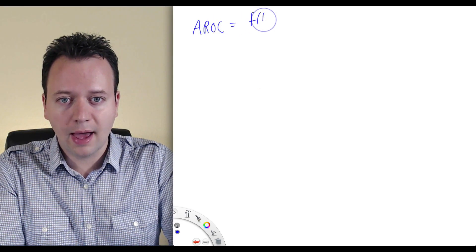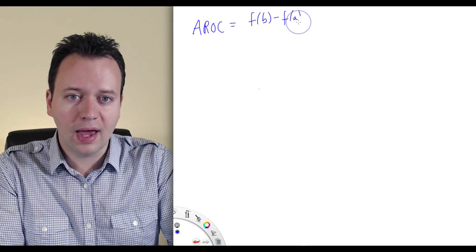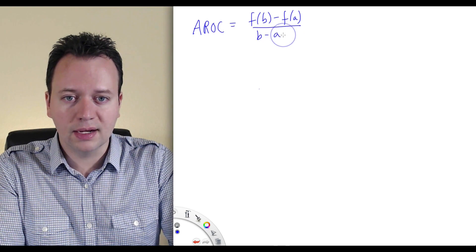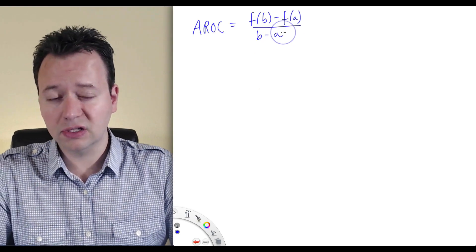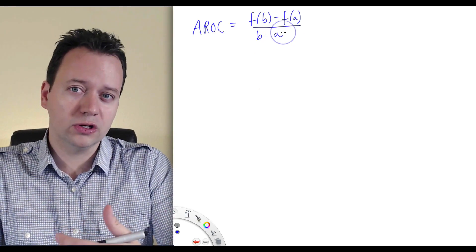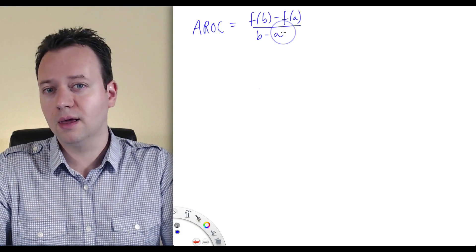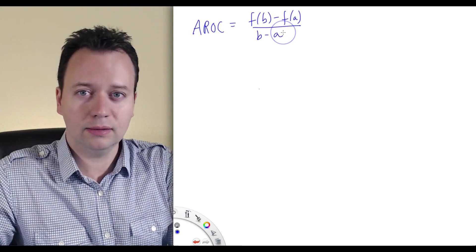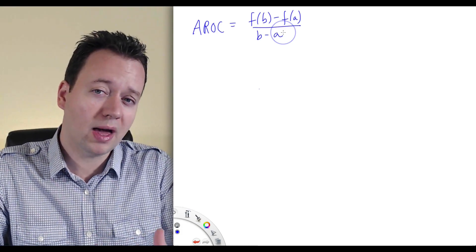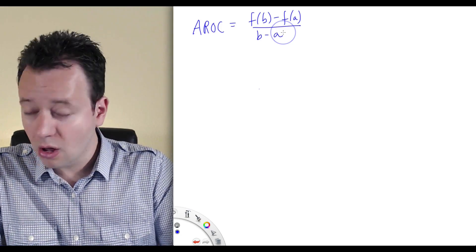Average rate of change, f of b minus f of a over b minus a. Now the function f does not have to represent the position of a car along a highway. In fact, there are many other instances in which you might want to understand something about the average rate of change.